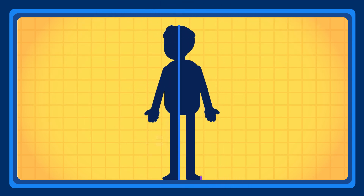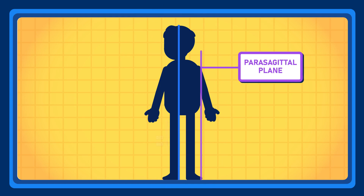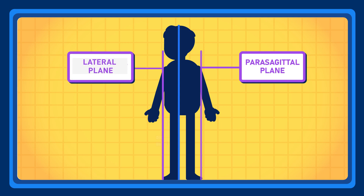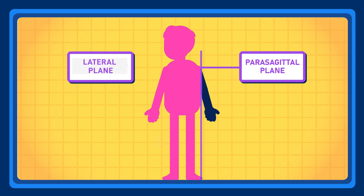On the other hand, the longitudinal or parasagittal plane is any vertical plane parallel to the median plane, but not located in the middle. Thus, it does not divide the left and right parts of the body equally.